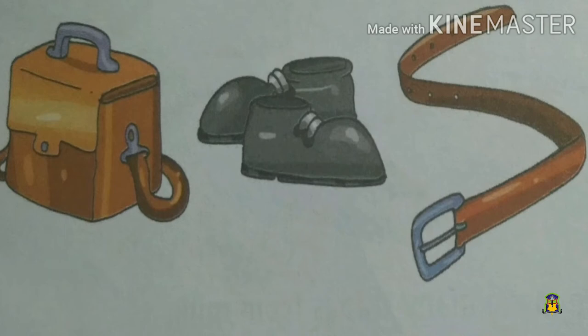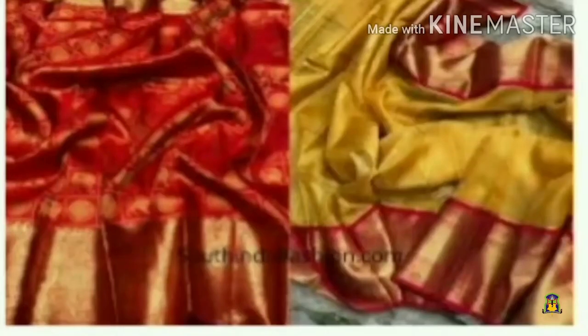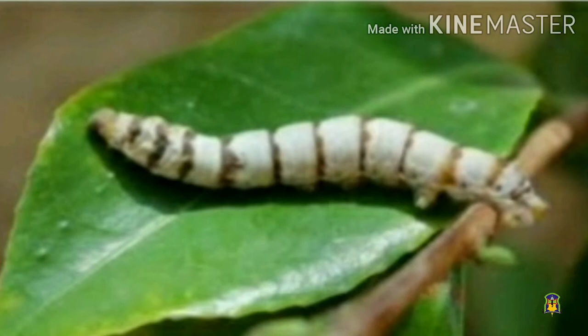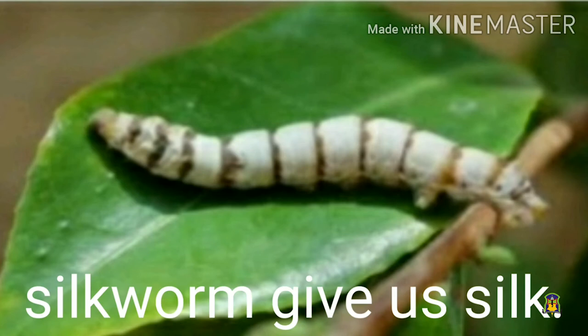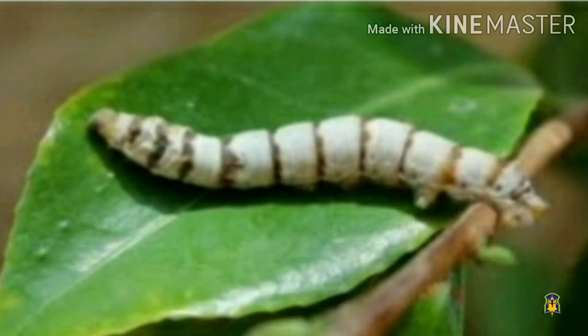It is wrong and cruel to kill animals for leather. Look at this picture — this is a silk saree. It is very beautiful! Do you know which material is used for making this saree? That is silk. From where do we get silk? Look at the picture — this is a small insect. Do you know which insect it is? This is a silkworm, and the silkworm produces silk. They spin out thread from tiny holes in their jaws.